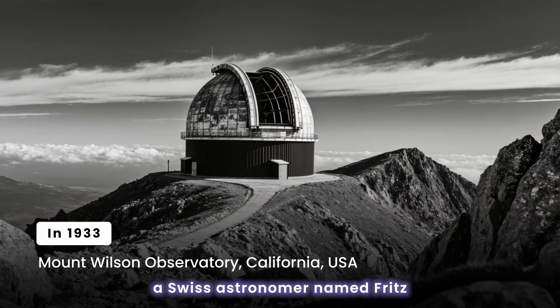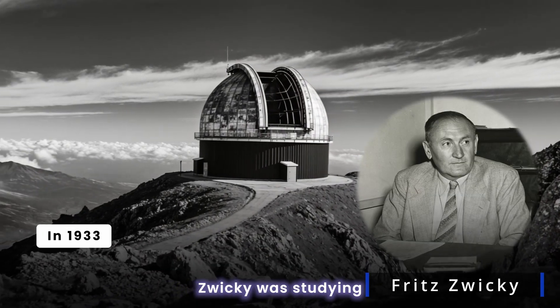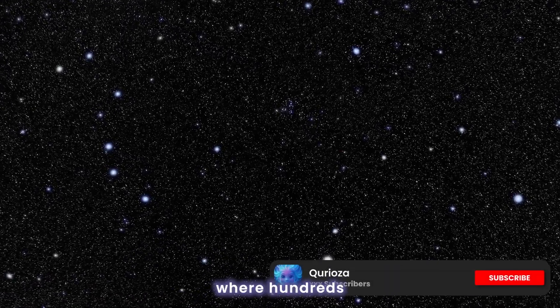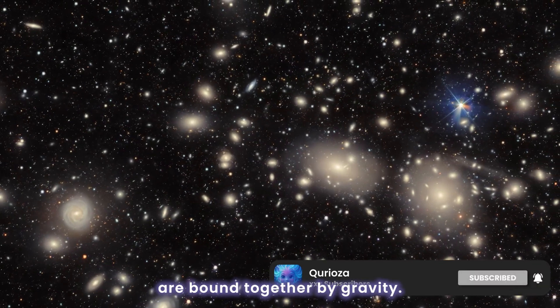In 1933, a Swiss astronomer named Fritz Zwicky was studying a massive group of galaxies known as the Coma Cluster. A galaxy cluster is like a cosmic city where hundreds or even thousands of galaxies are bound together by gravity.